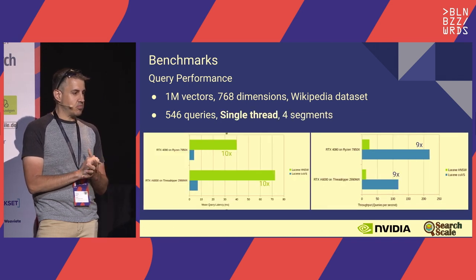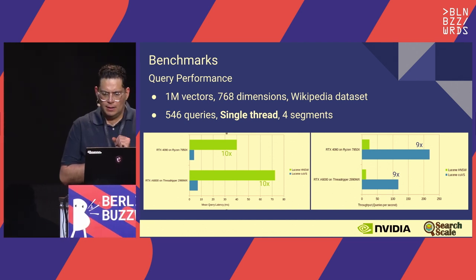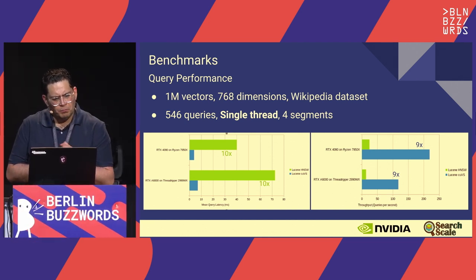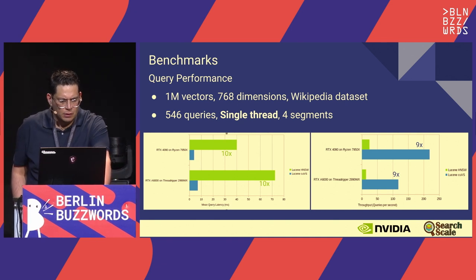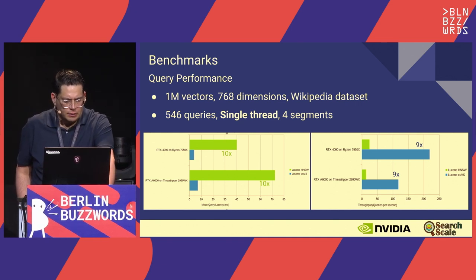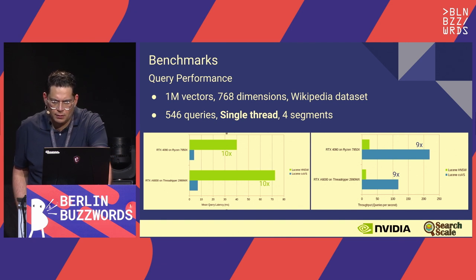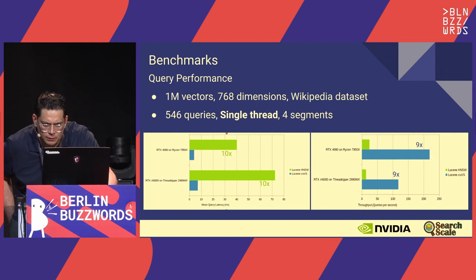Using single threads, we are seeing a 10x improvement on RTX 4090 and a 10x improvement on A6000. We're also comparing against AMD processors—the Threadripper and the Ryzen 9 7950. We have a whole lot of numbers and expect more in the coming weeks.